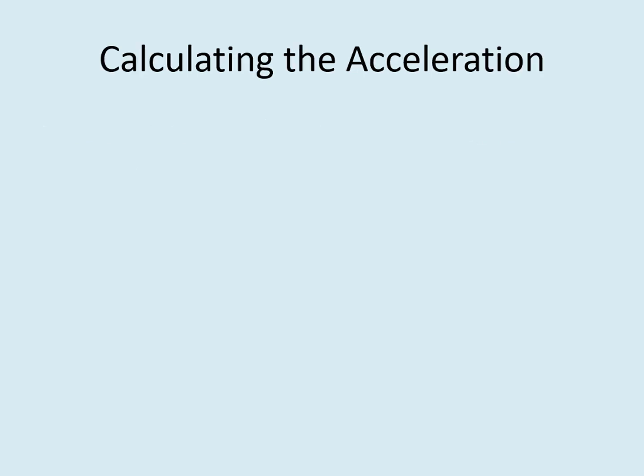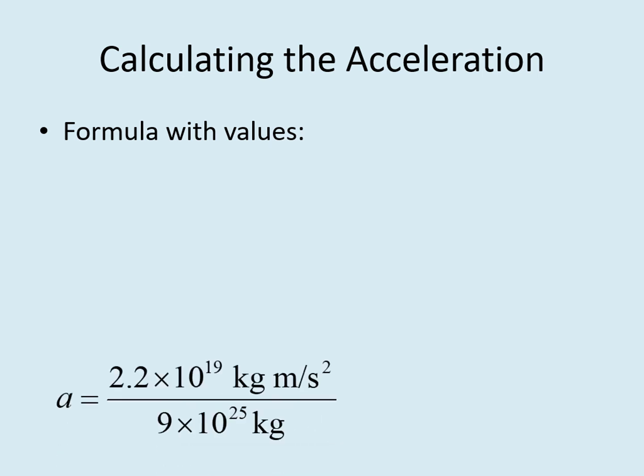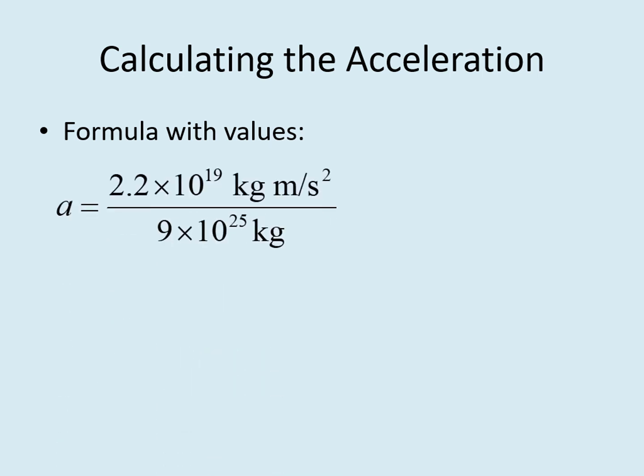We're finally ready to calculate how much a planet accelerates. We start by listing the formula again, this time with the values of the mass of one of the planets and force included. We'll continue using the 15 Earth mass planet from the previous slide. Also notice that we've written out newtons as kilograms meter per second squared. That will make it easier to keep track of what's happening with the units.